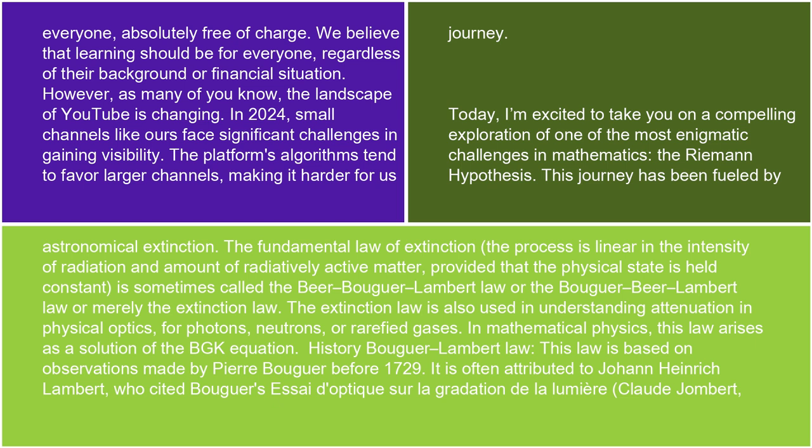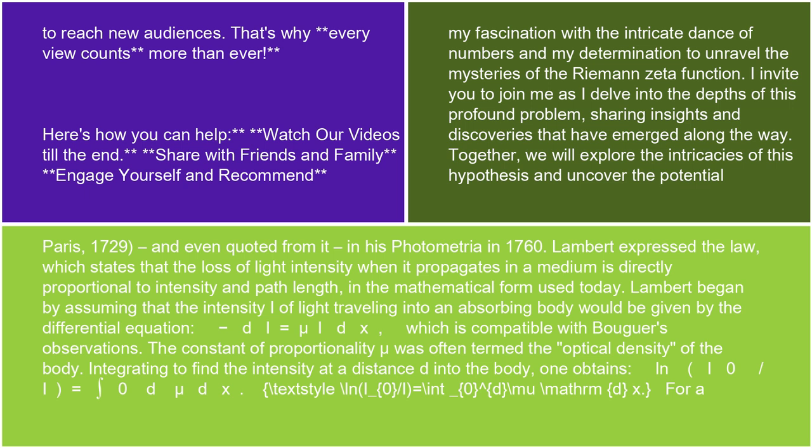History: Bouguer-Lambert Law. This law is based on observations made by Pierre Bouguer before 1729. It is often attributed to Johann Heinrich Lambert, who cited Bouguer's essay 'D'Optique sur la gradation de la lumière' (Claude Lambert, Paris, 1729),